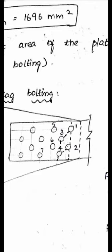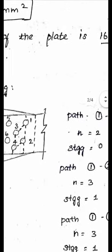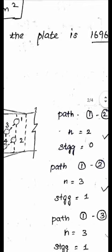Other possibilities also exist. The path may go from edge to 1, then 1 to 2, 2 to 4, then 4 to edge. For path 1-2-4, there are 3 holes so n = 3. How many staggered pitches are involved? Only 1 inclined line, between 2 to 4, so staggered = 1. For path 1-3-4, it is also n = 3, staggered = 1, with the stagger between 1 to 3. Since these two paths give the same net area, we calculate for path 1-2-4 only.